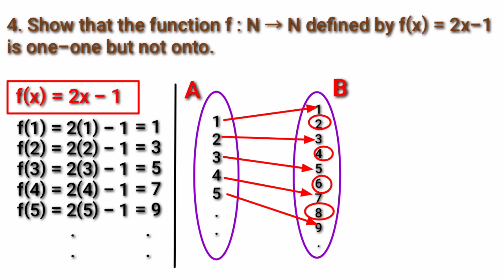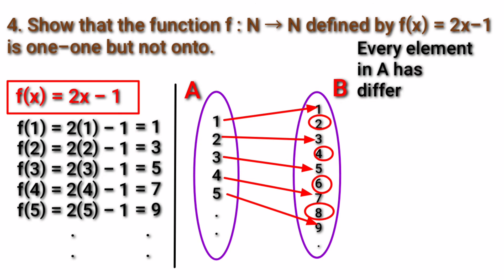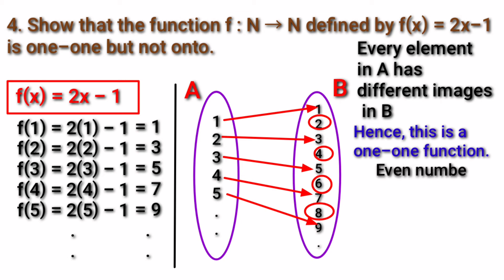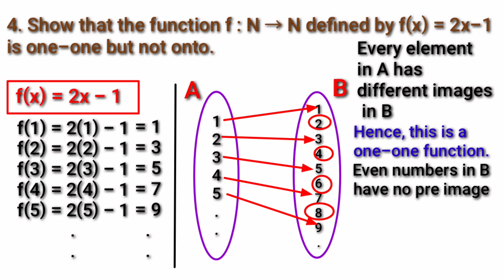Also, the even numbers 2, 4, 6, 8, 10, etc. in B have no pre-images in A. So we can't say that it is onto. Hence, every element in A has different images in B, so this is a one-one function. The even numbers in B have no pre-images in A, hence this is not an onto function.